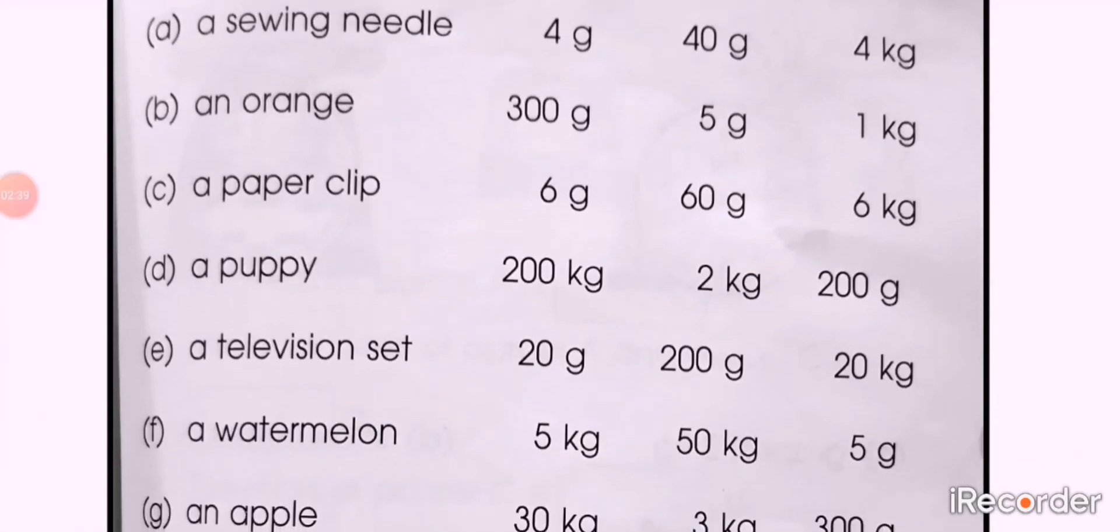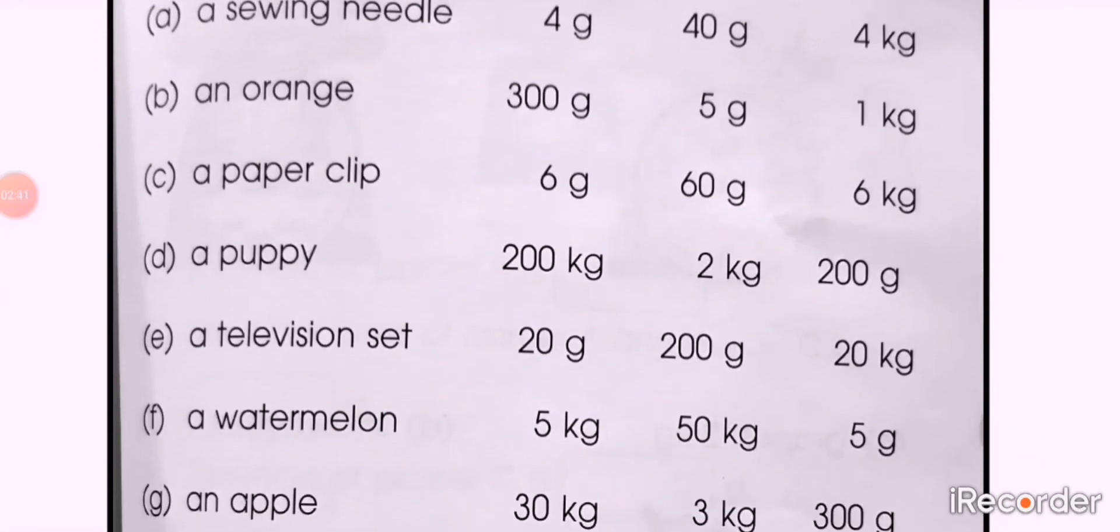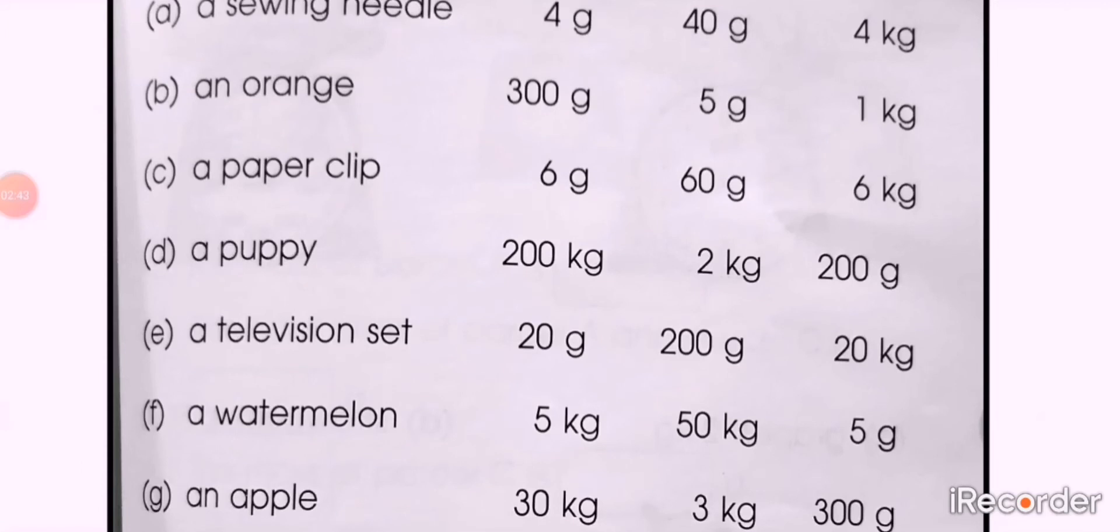Part E: a television set. Three options are here: 20 grams, 200 grams, and 20 kg. First choose the unit. Is it in grams or kilograms? Then circle the right one.